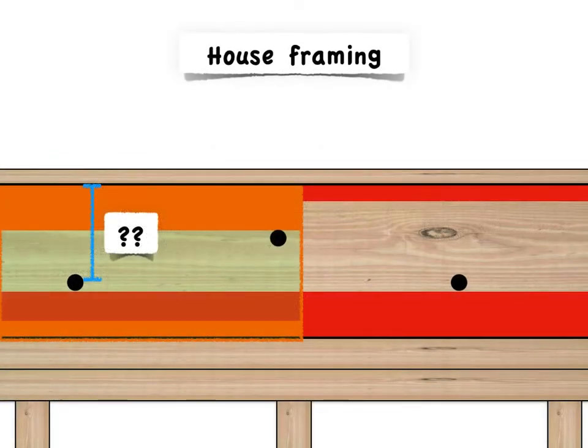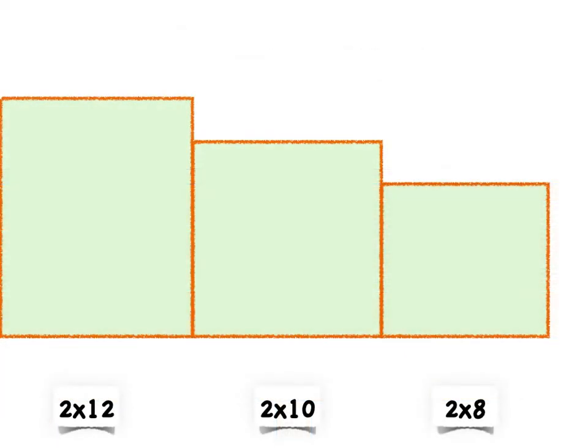So there's a minimum allowable distance from the bottom fastener to the top of the ledger. And it's different for each of the three different ledger sizes recognized in the IRC.